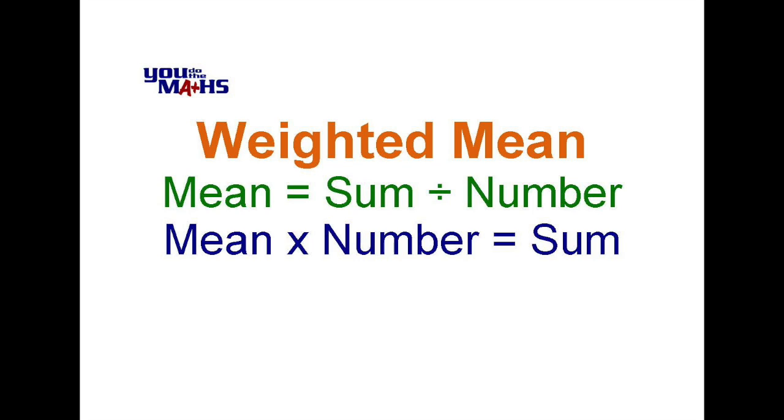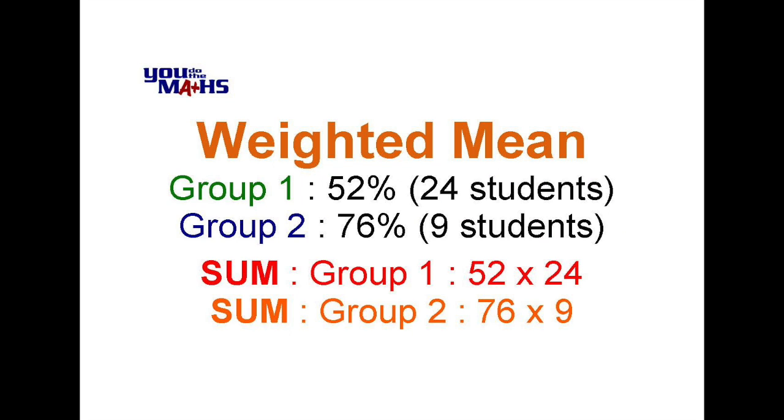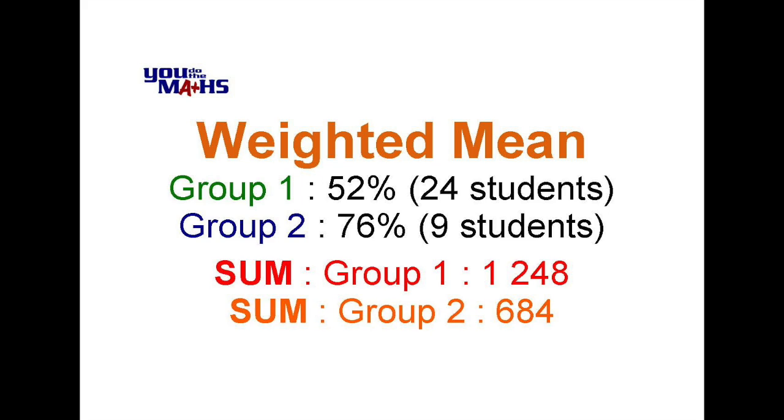So that means that we can work out the sum for both of the groups. The sum for group one is 52, which is the mean, multiplied by 24, the number of students. And the sum for group two is 76, its mean, multiplied by 9, the number of students. That means we can work out the sum for each of those groups.